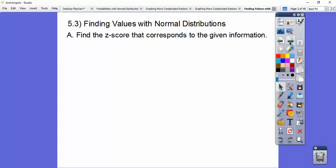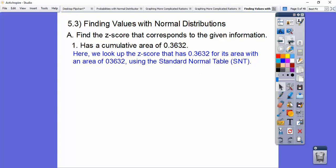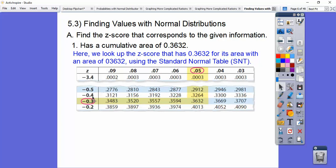Find the z-score that corresponds to the given information. It has a cumulative area of 0.3632. So you're going to have to open it up to your standard normal distribution table, which in my book is table 4. I think it was table A in my last stats book that I taught. But you look in that body of all those decimals, and you find the z-score that is closest to 0.3632. And so here I found it. If you go down to the z-score of negative 0.35, we get 0.3632 right there. So our z-score is negative 0.35.